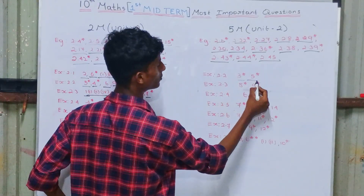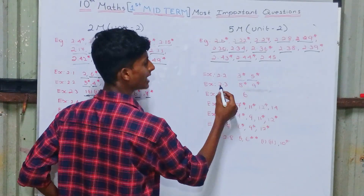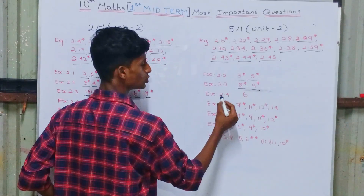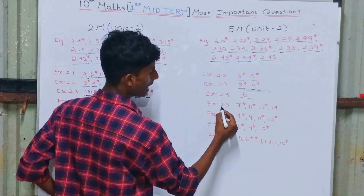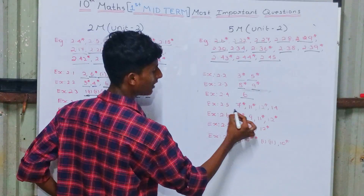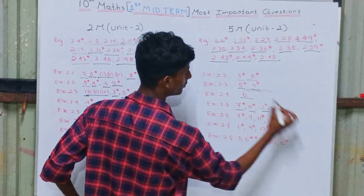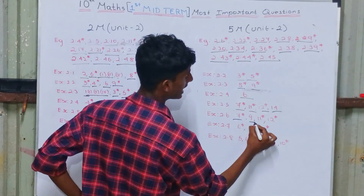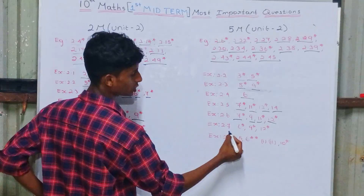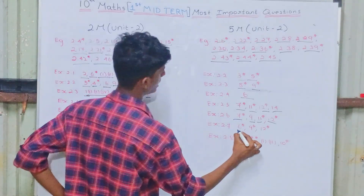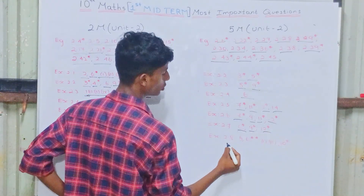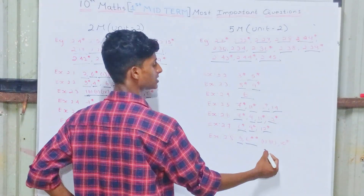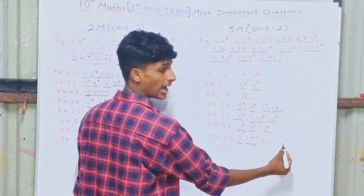Exercise 2.2: 3rd sum, 5th sum (very important). Exercise 2.3: 8th sum, 9th sum important. Exercise 2.4: 6th sum (very important). Exercise 2.5: 7th, 11th, 12th, 14th sums. Exercise 2.6: 7th, 9th, 11th, 12th. Exercise 2.7: 6th, 9th, 12th. Exercise 2.8: 5th sum, 6th sum — 1st and 2nd subdivision — and 10th sum.